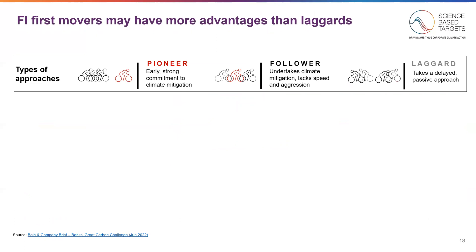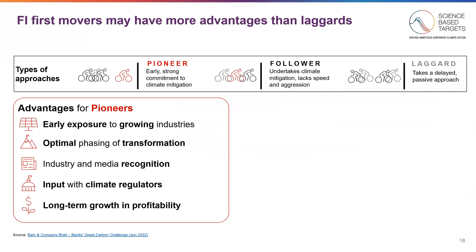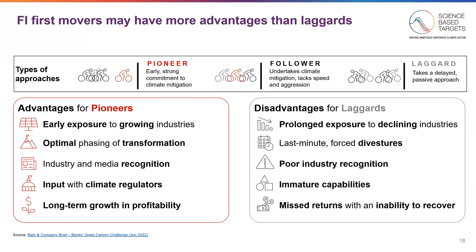So, what happens to financial institutions who make these first moves? Early assessments show that pioneers may have more advantages than followers and laggards that take a more passive approach. On the left-hand side, you can see the advantages of being a pioneer: early exposure to growing industries, optimal phasing of the transformation, an opportunity to provide perspective to climate regulators, and long-term growth and profitability. In contrast, laggards may have more prolonged exposure to declining industries that force last-minute divestitures, won't be known as industry leaders, won't have developed the necessary capabilities, and will have a harder time recovering.